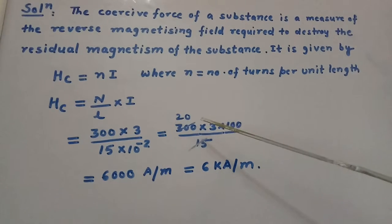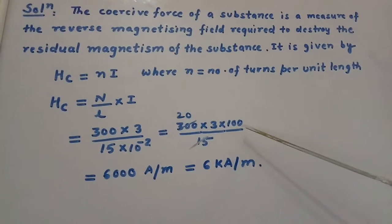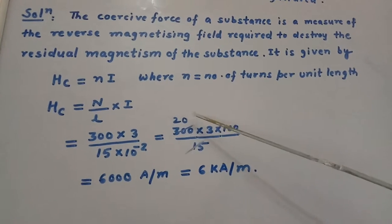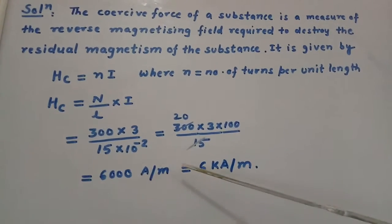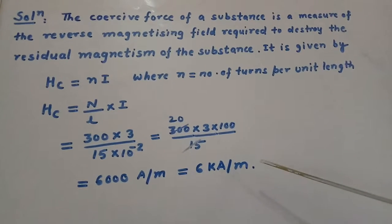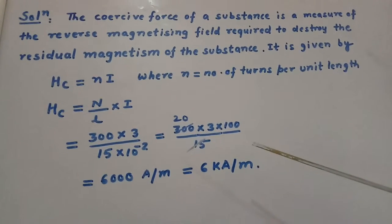This comes to be 300 into 3 into 100 divided by 15. We cancel 15 and 300 by 20, so we get 6000 ampere per meter or 6 kilo ampere per meter, which is our answer. Thank you.